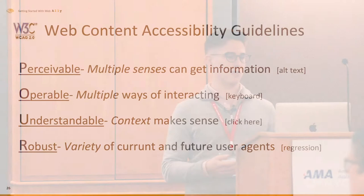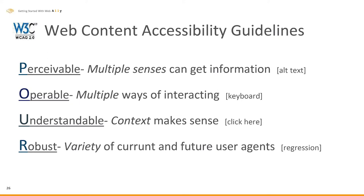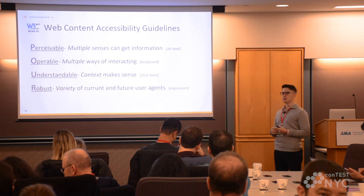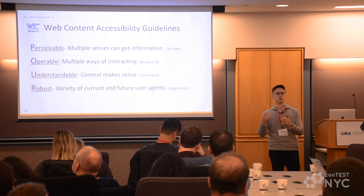Who says these are actually issues? The W3C has Web Content Accessibility Guidelines — typically called WCAG — summarized in the acronym POUR. You want your website to be Perceivable, meaning multiple senses can get the same information. Operable, meaning multiple ways of interacting — mouse, keyboard, head wand. Understandable, meaning the content makes sense. And Robust, meaning no regression — as you iterate with new releases, browsers, and screen readers, there's no regression.